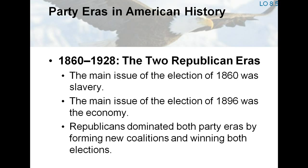1860 to 1928: the two Republican eras. The issue of slavery dominated American politics and split both the Whigs and the Democrats in the 1850s. The Republican Party rose in the late 1850s as the anti-slavery party, forging a coalition out of the remnants of several minor parties and electing Abraham Lincoln as president in 1860. The Civil War brought a party realignment, and the Republican Party was in ascendancy for more than 60 years, though the Democrats controlled the South. The election of 1896 was a watershed during this era, and the Republicans continued as the nation's majority party until the stock market crash of 1929 and the ensuing Great Depression.